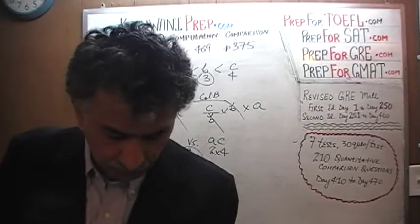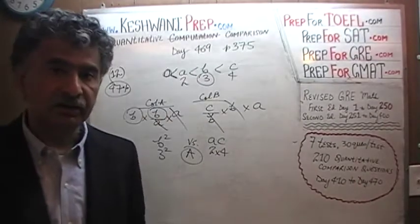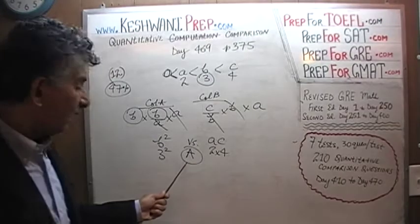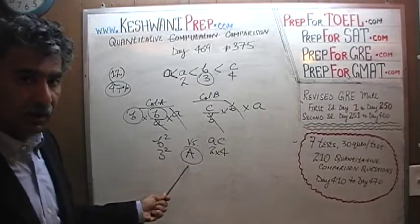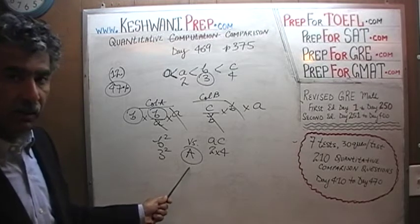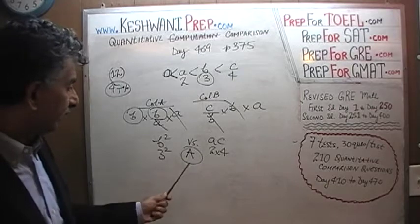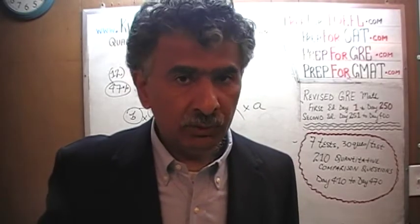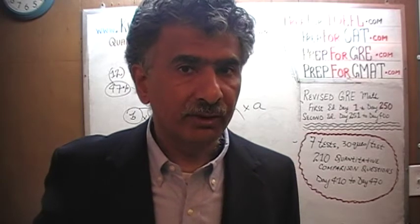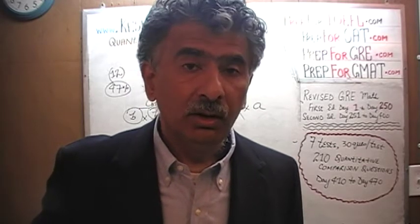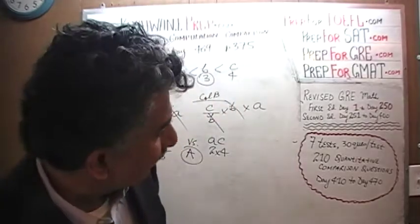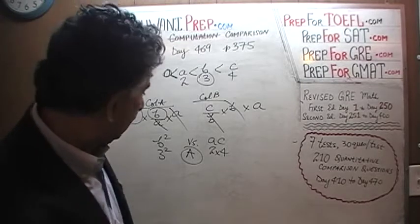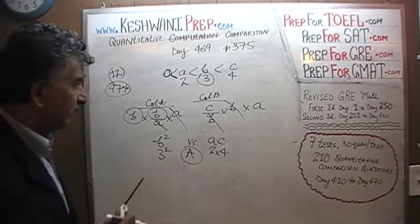But the question is, do we stop here? The answer is no — we do not stop here, because we have to contemplate all the possibilities. We do not know if the quantity in column A is always greater unless we try the nasty numbers. Don't just stop by plugging in nice numbers — you must always try the nasty numbers.